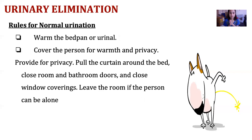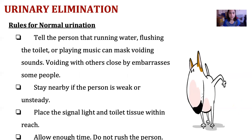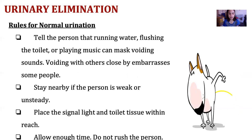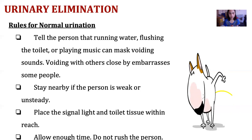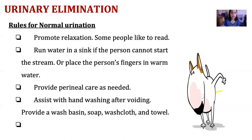Always provide privacy during elimination, as patients are very particular about their private parts being exposed. Tell the person that running water, flushing the toilet, or playing music can mask voiding sounds, since voiding with others nearby may embarrass some people. Stay nearby if the person is weak or unsteady, as they may fall. If they want the door closed, tell them not to lock it so you can quickly enter if anything happens. Keep the signal light and toilet tissue within reach. Allow enough time and do not rush the person. Promote relaxation; some people like to read while eliminating.